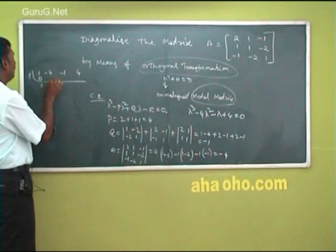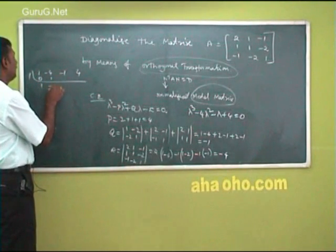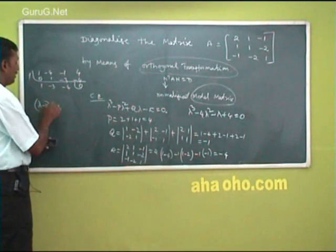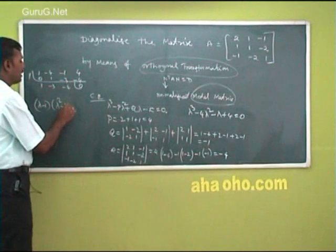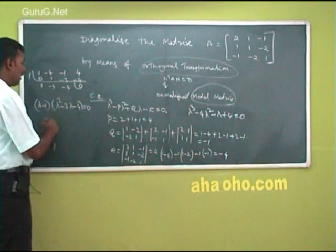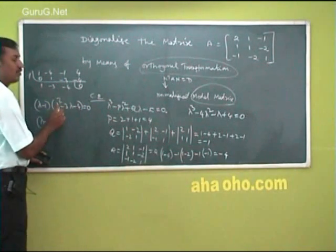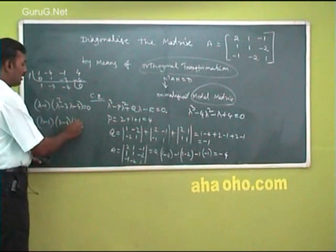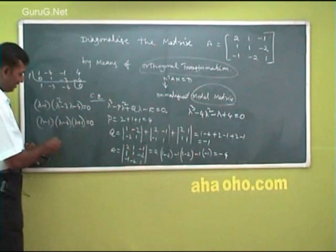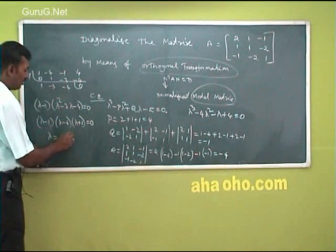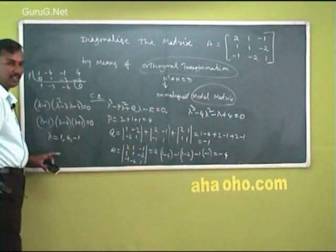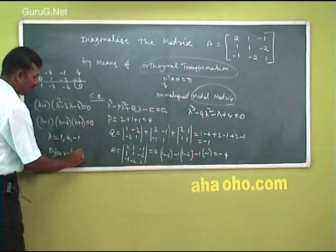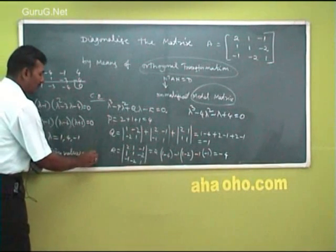Write 1 here. So 1, 1, minus 3, minus 3, minus 4, minus 4. So (lambda minus 1) times (lambda squared minus 3 lambda minus 4) equal to 0. Then factoring: (lambda minus 4)(lambda plus 1) equal to 0. So lambda equal to 1, 4, minus 1. Therefore the eigenvalues are 1, 4, minus 1.